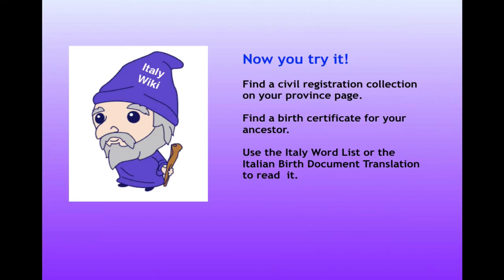Now you try it. Go to the page for your ancestor's province and find the Civil Registration Collection. Find a birth certificate for your ancestor, then use the word list and the translated birth document to read that record.